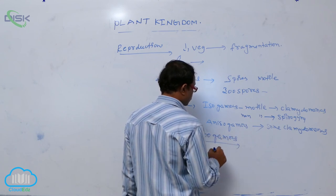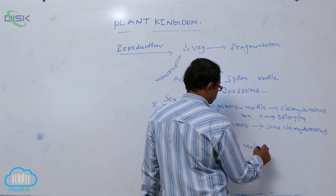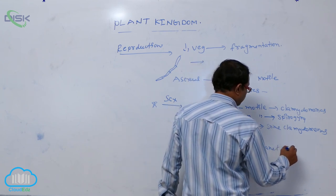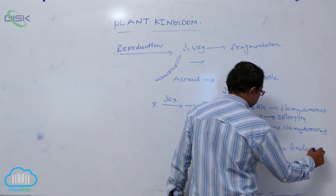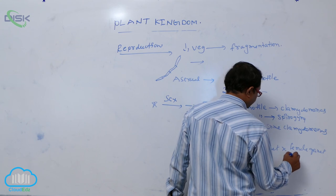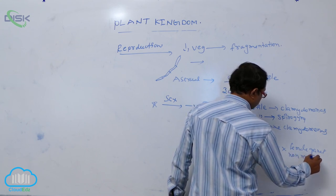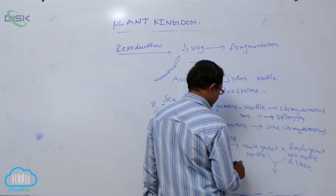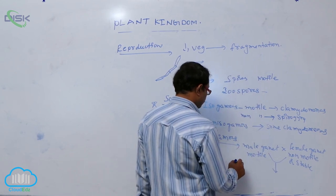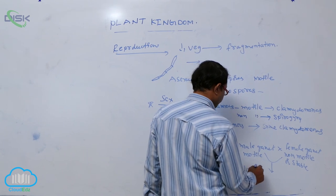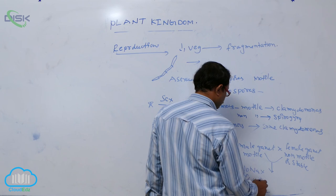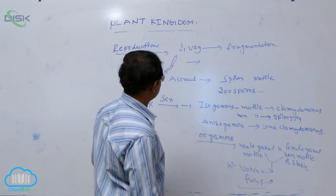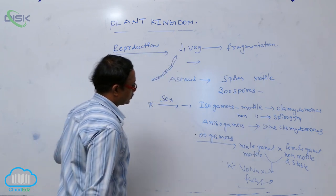Oogamous means the male gamete is motile and the female gamete is non-motile or stationary. If fusion occurs between these two gametes, that is known as oogamy. Examples are Volvox, which is a colonial form of green algae, and Fucus, which is a brown algae also known as kelp.